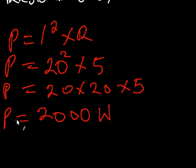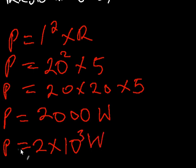So our power is equal to 2000 watts when you work out 20 times 20 times 5 using a calculator. So we can rewrite this as power is equal to 2 times 10 raised to the power of 3 watts. Thank you.